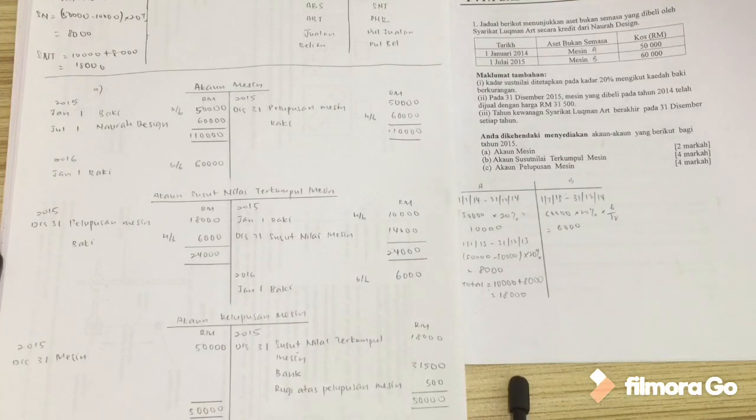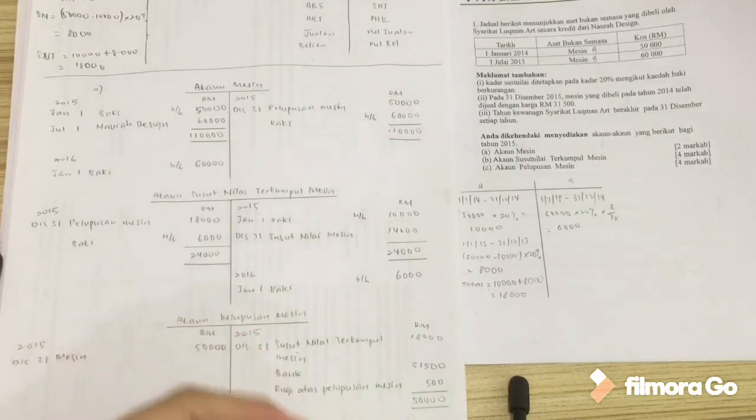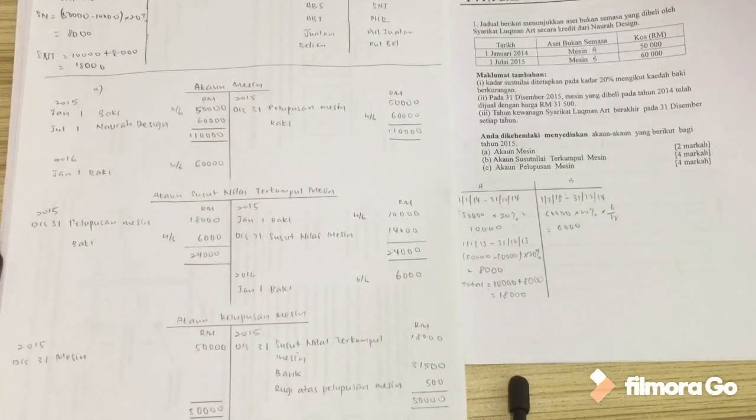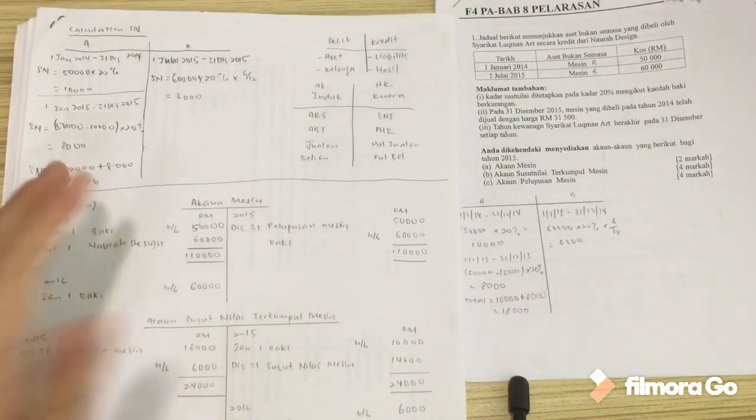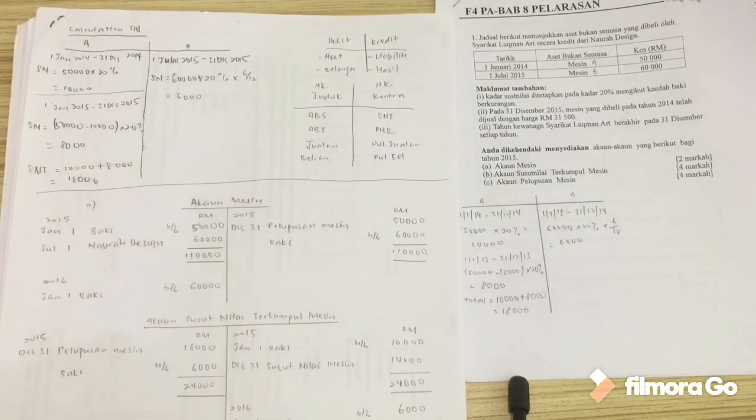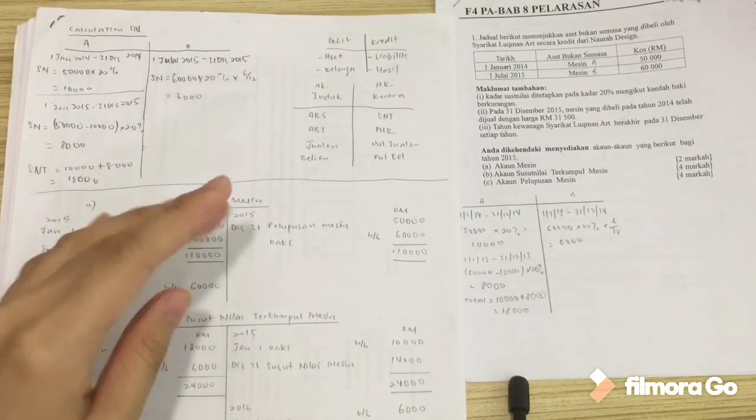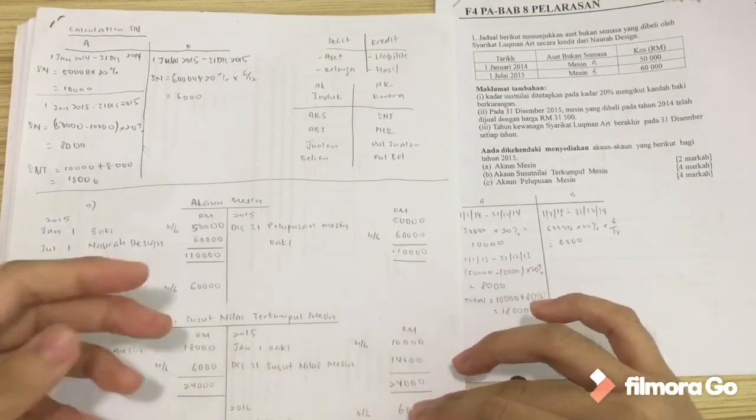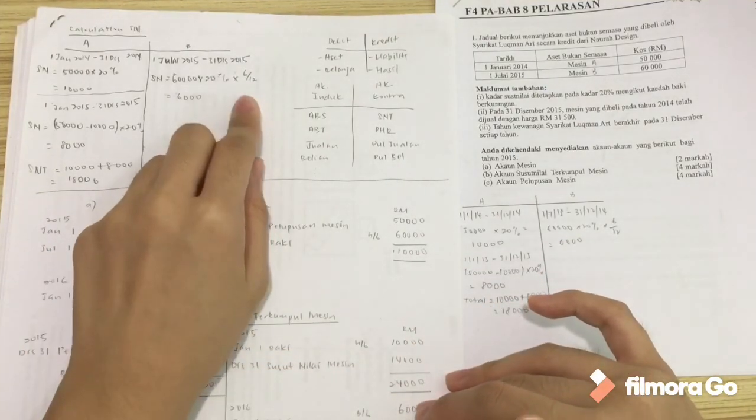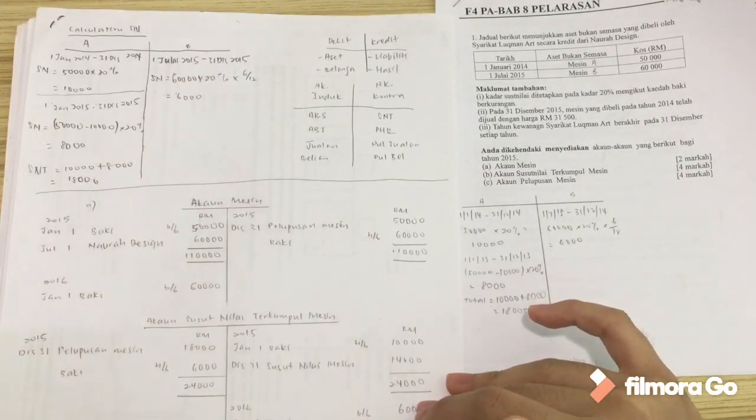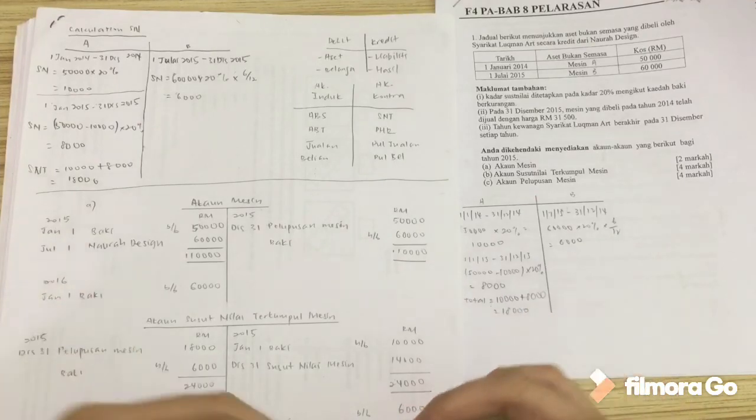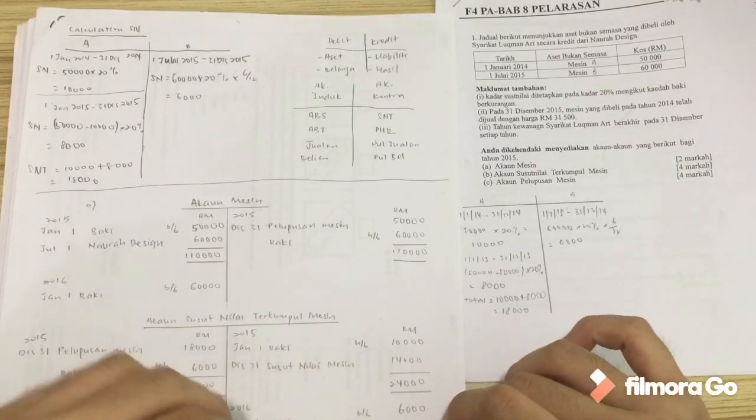In conclusion, I don't think it's really, really hard to go through the whole process, but the most confusing thing is the calculation of our susut nilai. Why? Because if you accidentally counted something wrong, then the whole thing, the whole account will be wrong because it's all connected. Imagine if you wrote seven months instead of six months, then this figure will be wrong and your accounts will all be wrong because the numbers are connected. So, yeah, that's it.